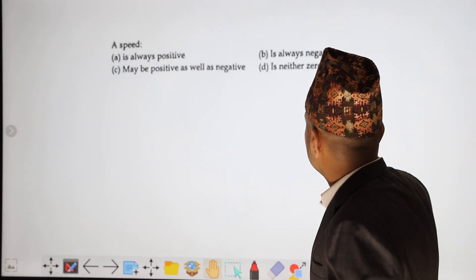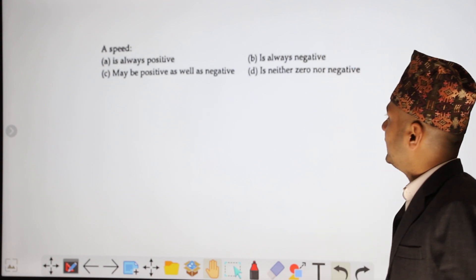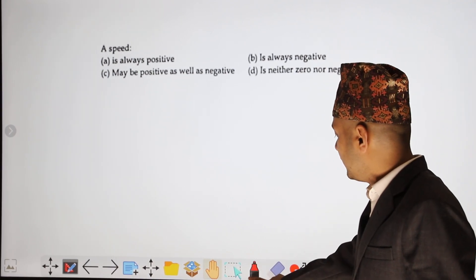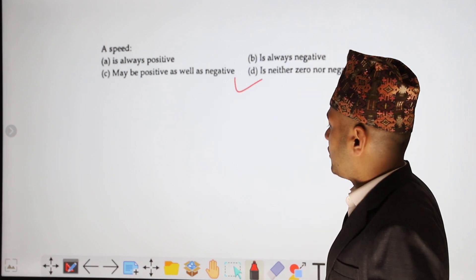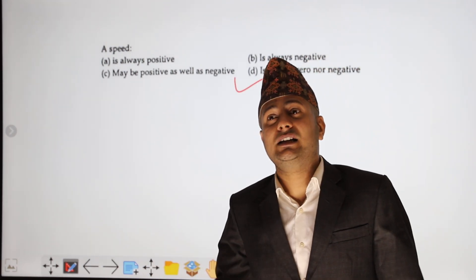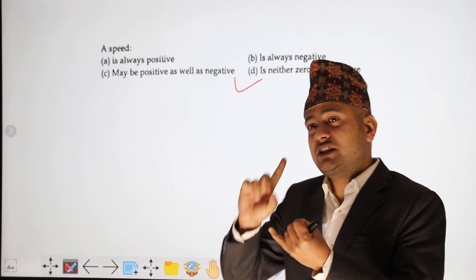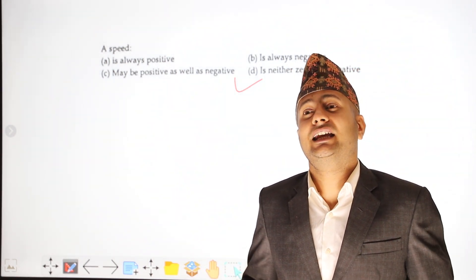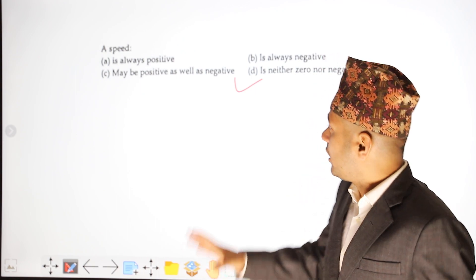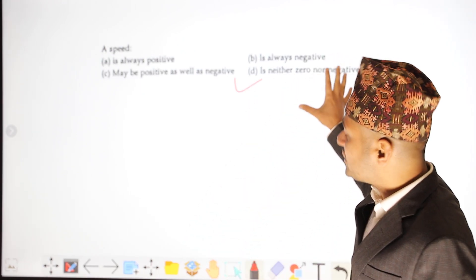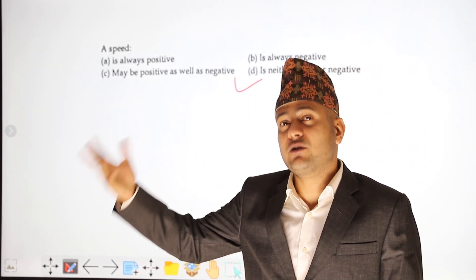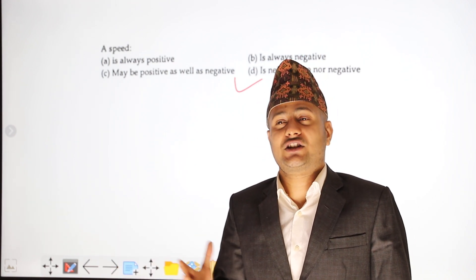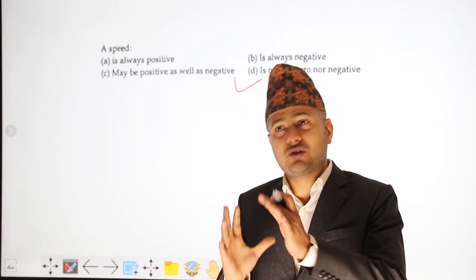Next: speed is always positive, is always negative, is neither zero nor negative, or may be positive as well as negative? Speed can be positive, negative, fraction, or zero. Speed cannot be zero or negative. Speed is neither zero nor negative. This is the best answer.